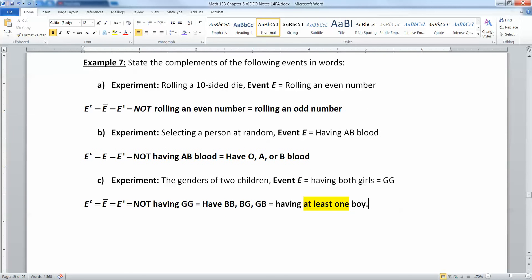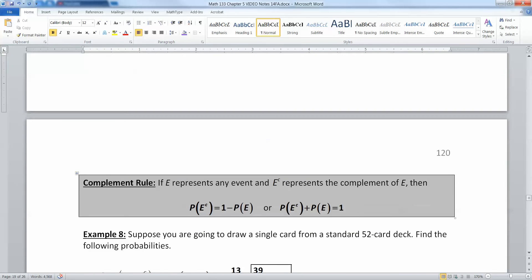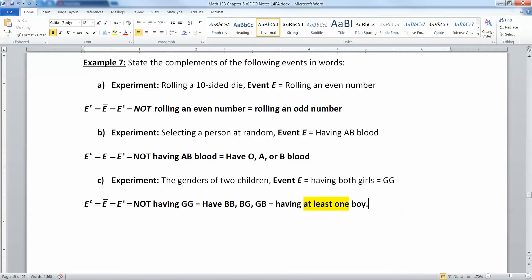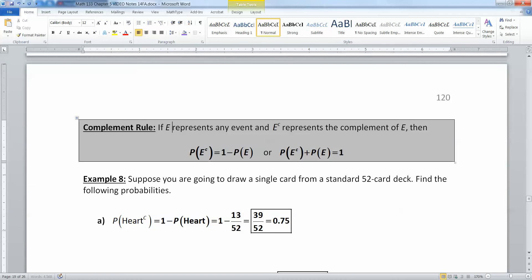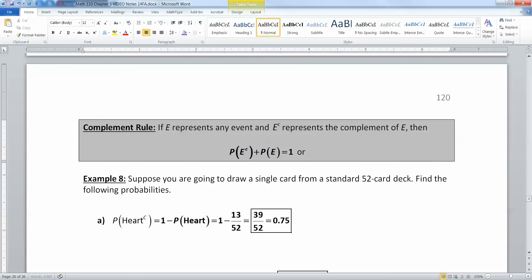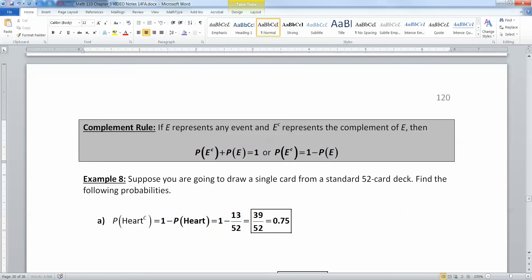Now that we know how to write up complements and kind of how they look, we need them to help us find probabilities. So why are the complements so important? Complements are important because there is a complement rule for probabilities. It says that if event E represents any event, and if E complement represents the complement of that event, then the two probabilities have got to add up to one. The probability of E complement is one minus the probability of E.